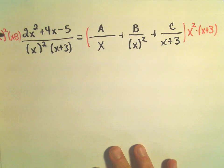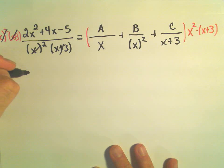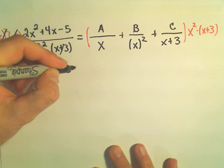And let's see if we can't clean things up nicely. On the left, everything is going to cancel out. We'll just be left with this numerator, 2x squared plus 4x minus 5.